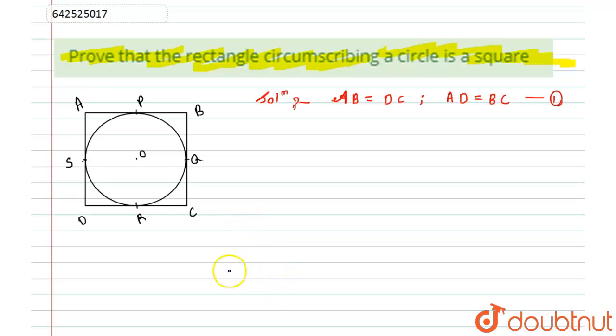Now if I look at the figure, here is the external point, that is B, from where tangents have been drawn onto this circle, that is BP and BQ. Similarly, AP and AS are tangents. As we know that tangents drawn from an external point onto the circle are equal.